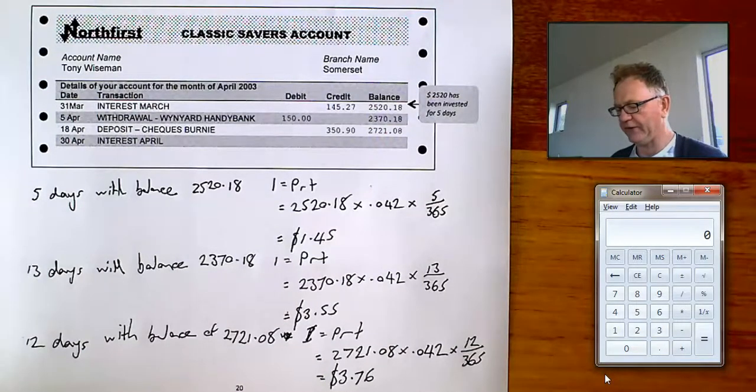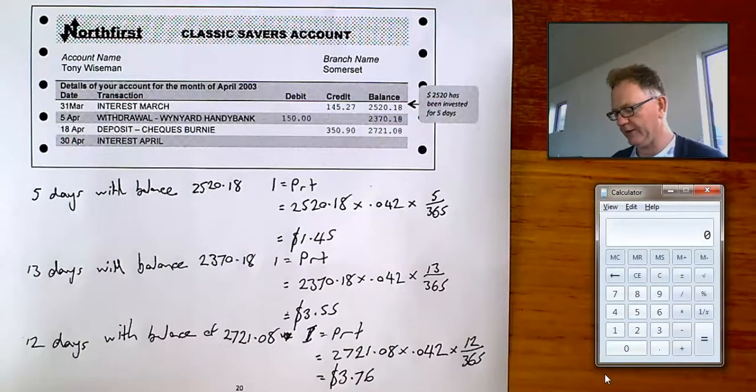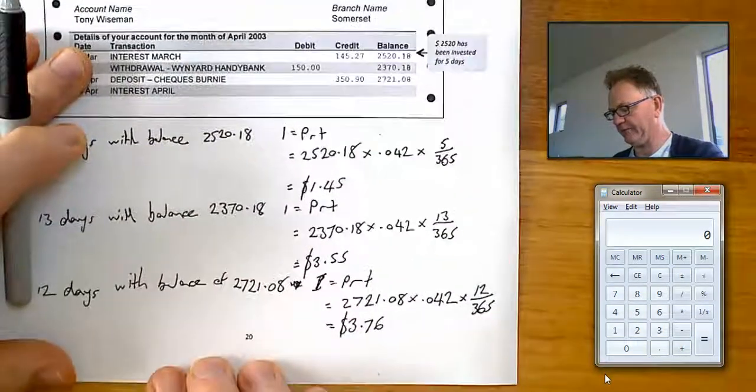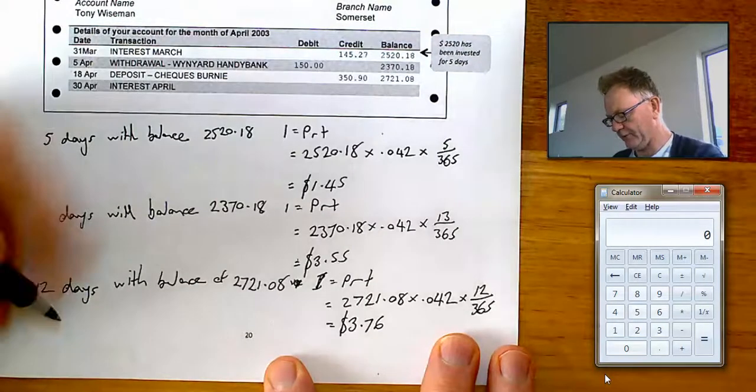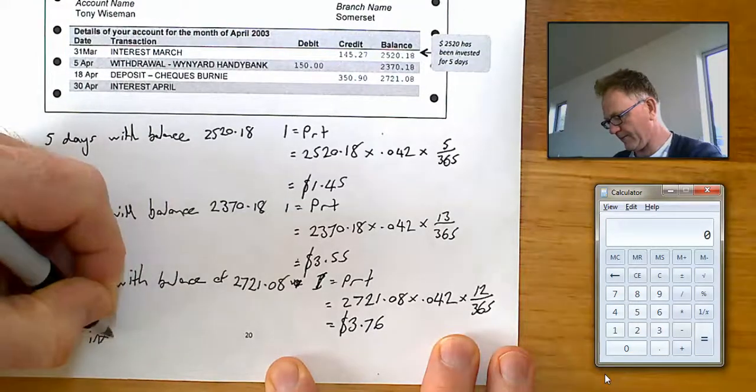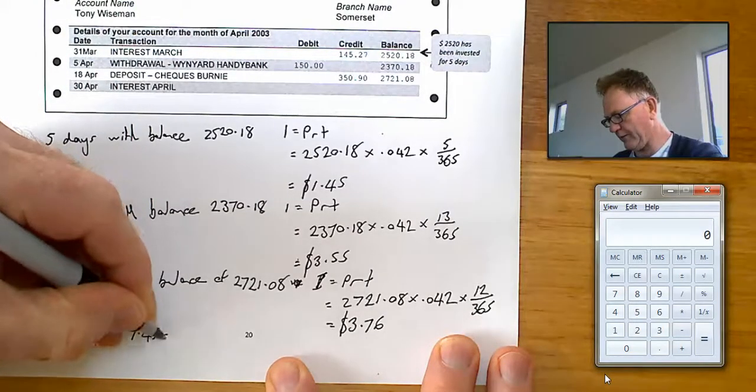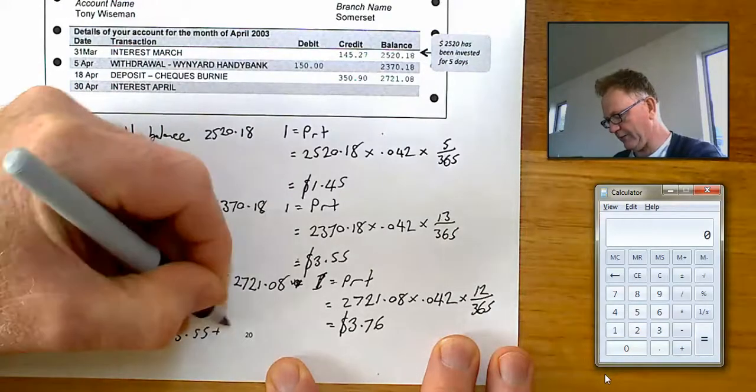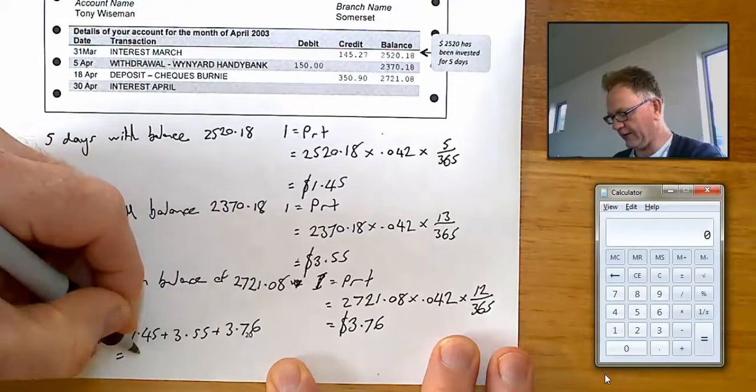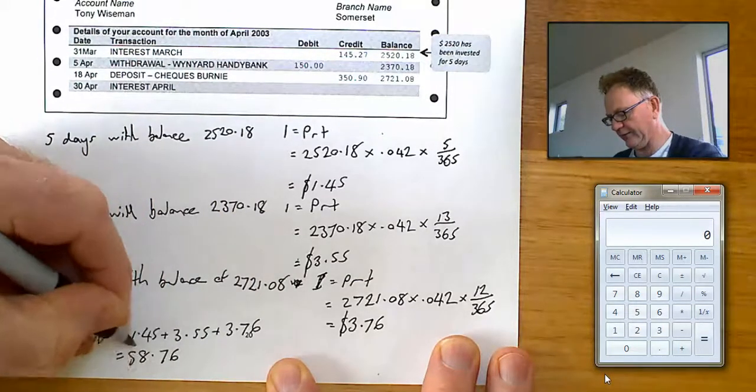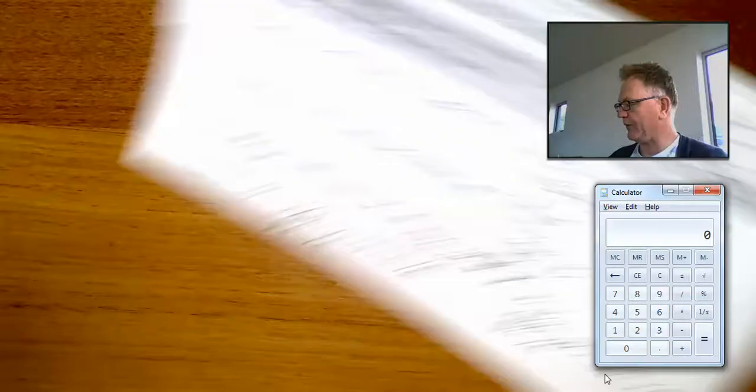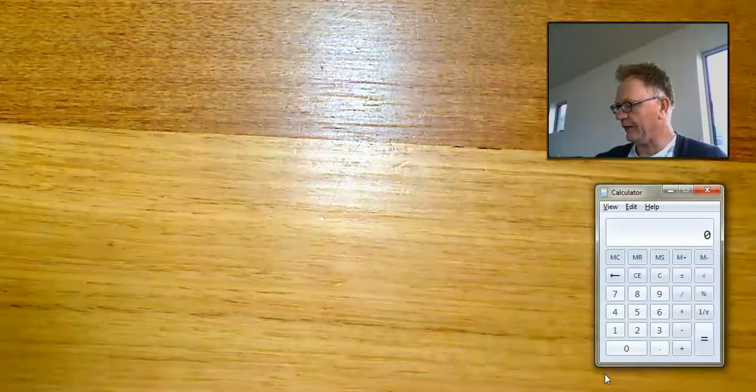Now the question asks us to work out the total interest for the month. And so what we have to do is simply add these three amounts together. Total interest. $1.45 plus $3.55 plus $3.76. And we'll get $8.76 interest. The last question on this over the page asks you to go for one more step.